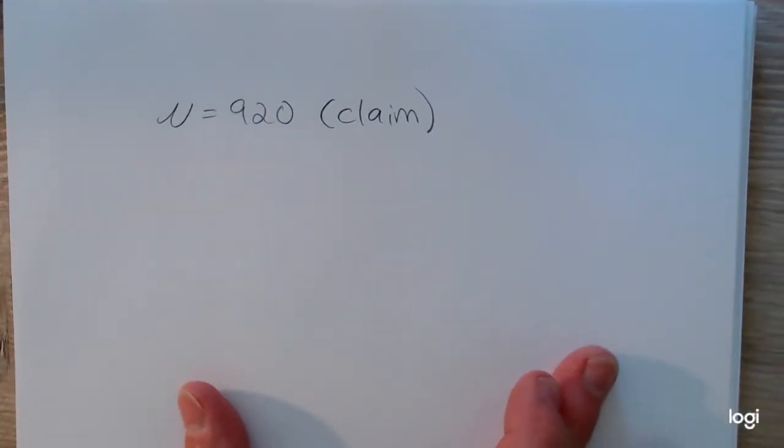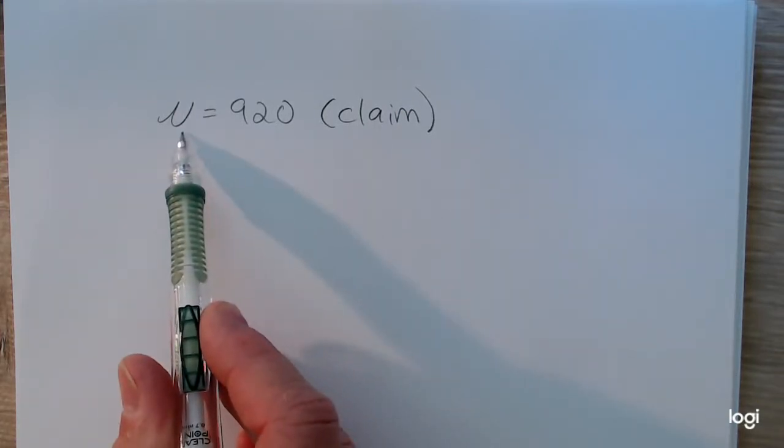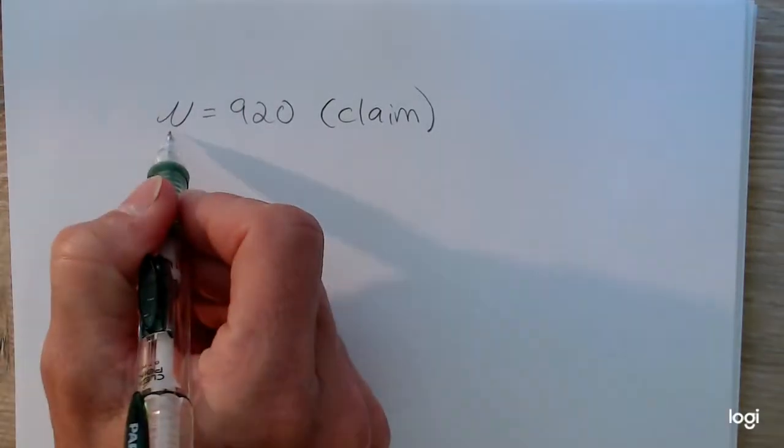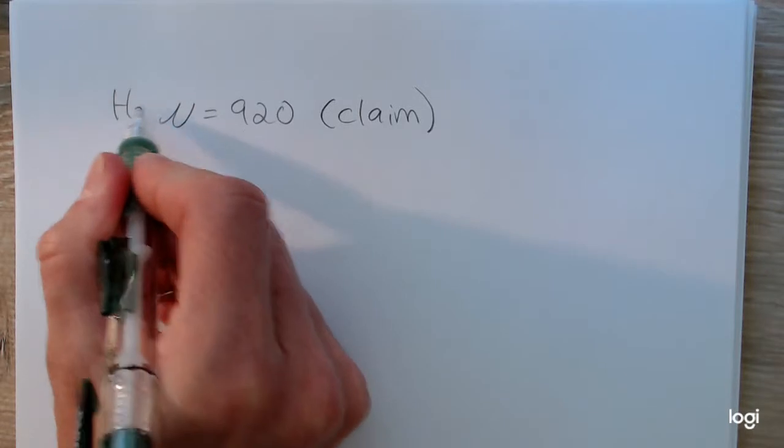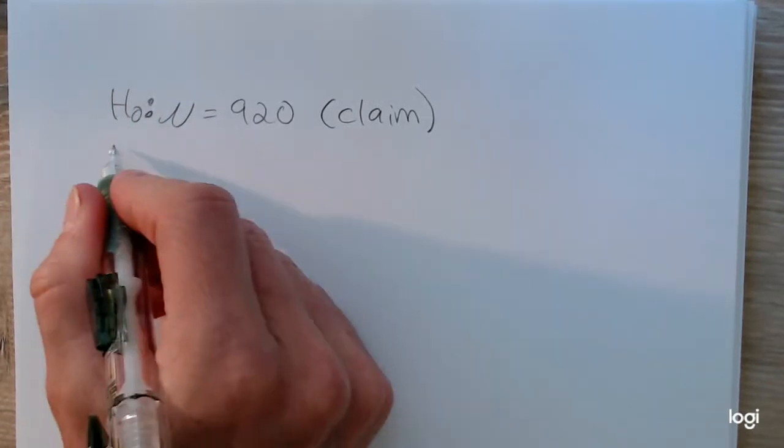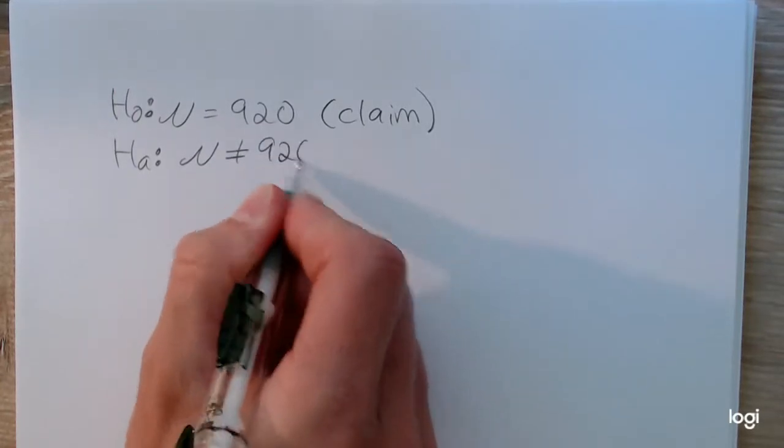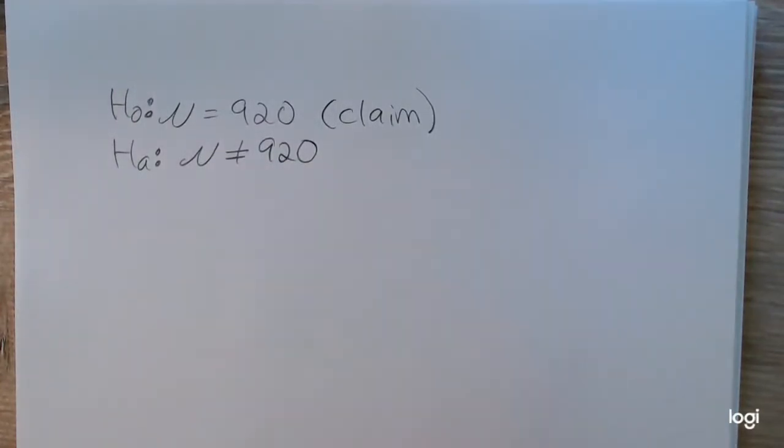Now you need to structure the null and the alternative around that. If the claim contains the case of equality, then it's the null hypothesis. Otherwise, it's the alternative. This contains the case of equality, so this makes this statement the null. It forces the alternative to be not equal to 920. No direction is implied or inequality is implied in this problem.